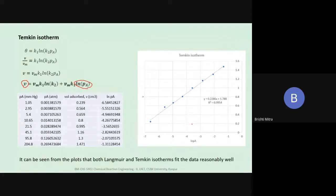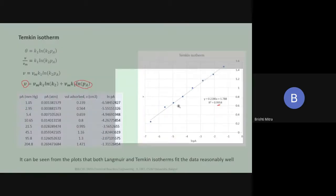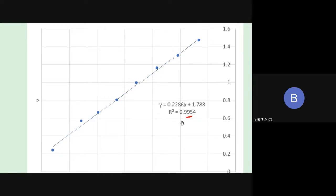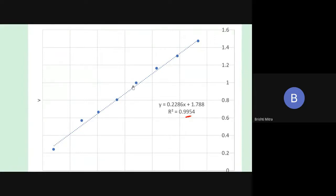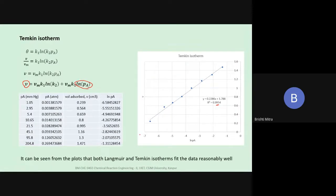With ln P_A on the x-axis and V on the y-axis, we convert partial pressure from mmHg to atmosphere, use volume adsorbed directly for the y-axis, and compute ln P_A for the x-axis. Drawing a straight line through the data gives an R² value of 0.9954. The first Langmuir fit was 0.9968, so unless you're using software for precise plotting, both appear to be reasonably good straight line fits.